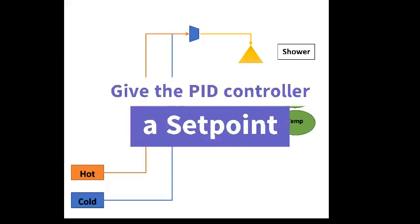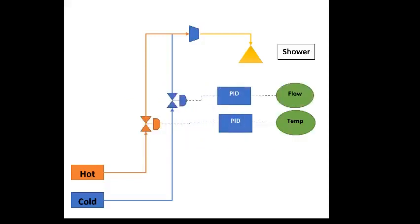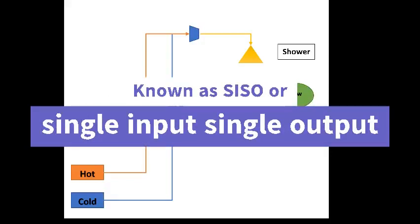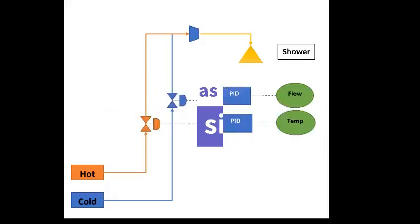All you then do is give the PID controller a set point for the flow and temperature. This is also known as a single input and single output controller.